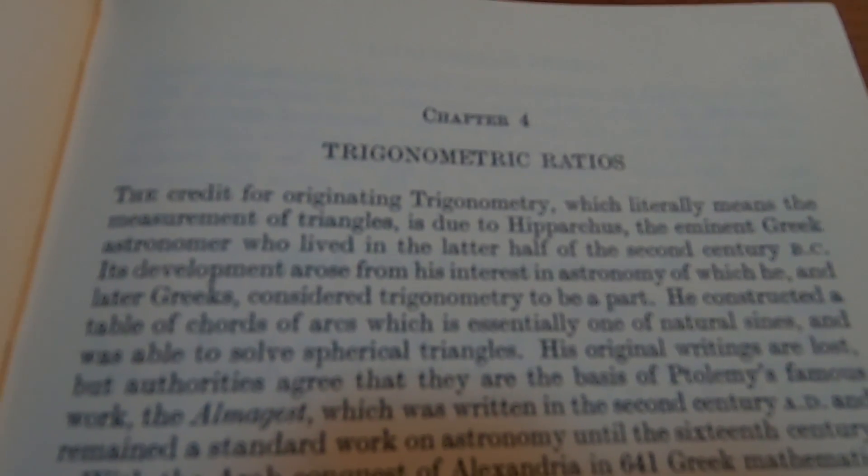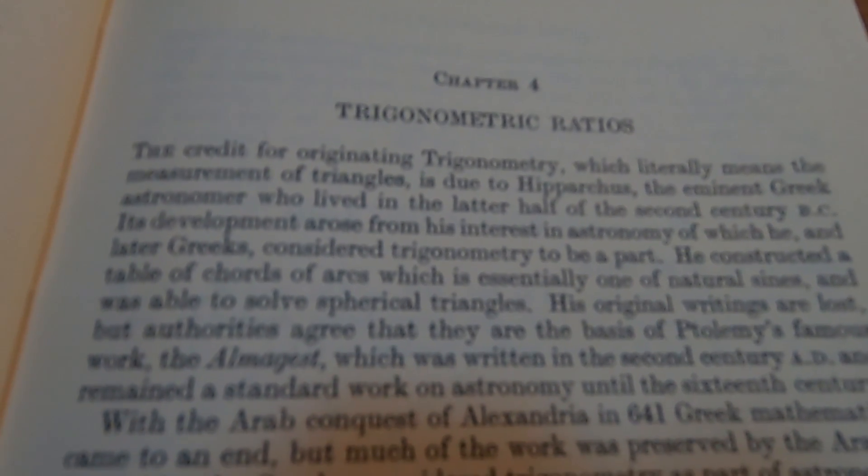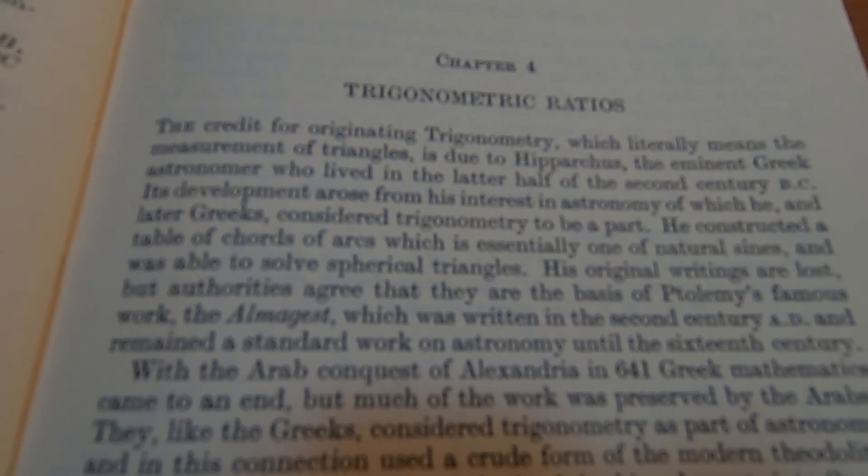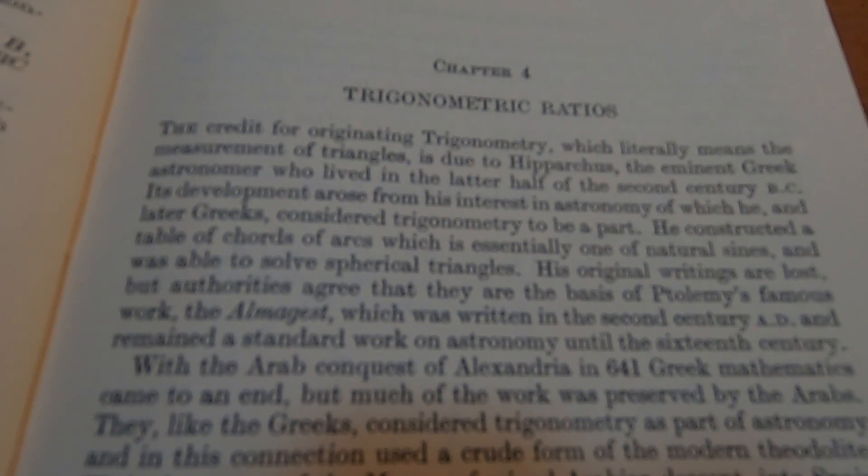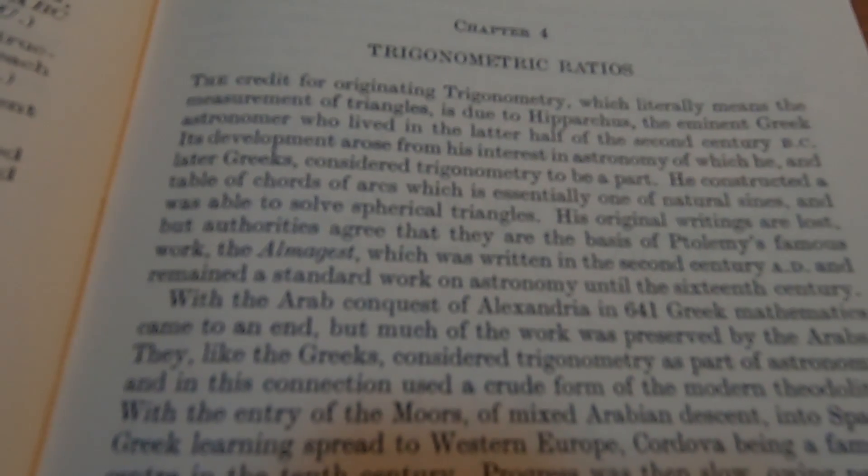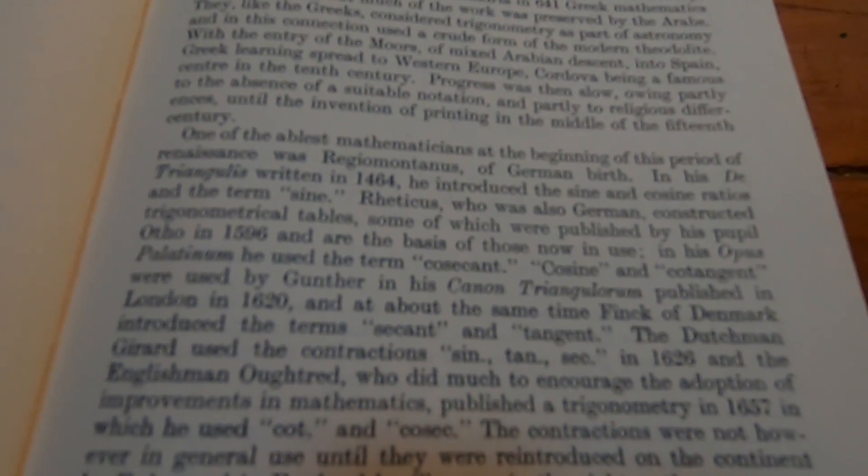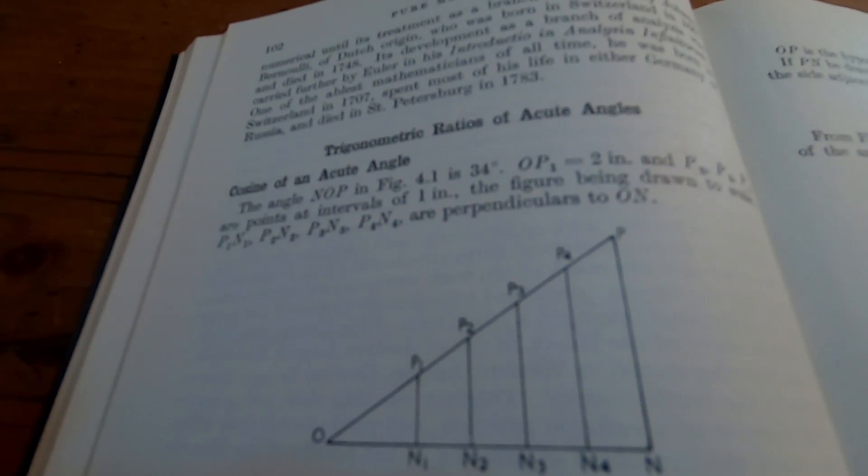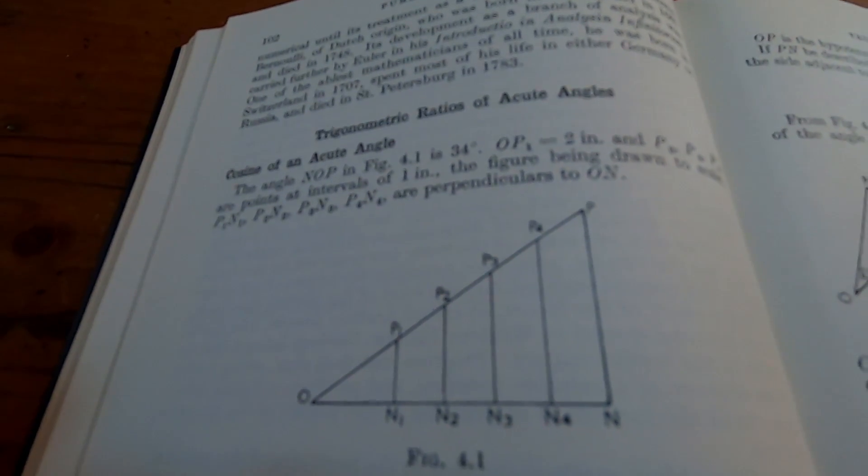This is chapter four, which is on trigonometric ratios. It says the credit for originating trigonometry, which literally means the measurement of triangles, is due to Hipparchus, the eminent Greek astronomer who lived in the latter half of the second century BC. Wow, that was a long time ago. And the authors go on and give you a complete history of what is about to be discussed, which is really nice. It kind of makes you appreciate where it all comes from.